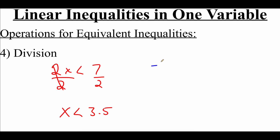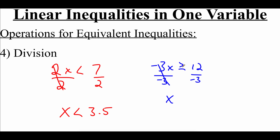A lot like multiplication, with division if you divide by a negative number you also have to flip the inequality symbol around. So if we had negative three x is greater than or equal to 12, to get rid of that times negative three we divide by negative three. Because we divided by a negative number, we flip the symbol from greater than or equal to, to less than or equal to. And 12 divided by negative three gives us negative four as our answer.